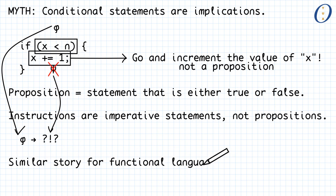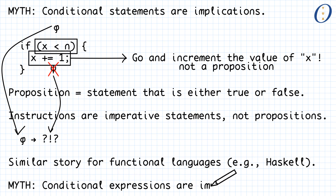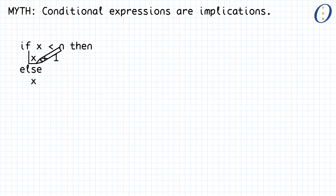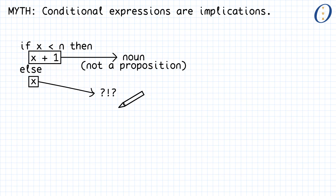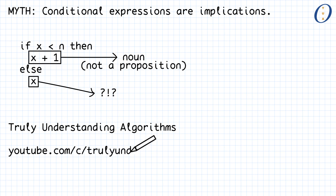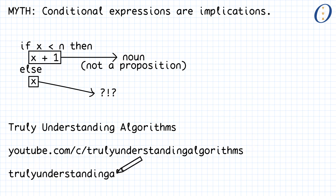A similar line of reasoning carries over to functional languages such as Haskell, which have conditional expressions instead of conditional statements. In such languages, the then-branch is some expression to be evaluated when the condition is true, and the expression is a noun, not a proposition. Furthermore, the conditional expression in a functional language must have an else branch, which would not fit anywhere in the 'conditionals as implications' myth. If you enjoy programming and want to learn more about algorithms, make sure you subscribe to the Truly Understanding Algorithms YouTube channel.